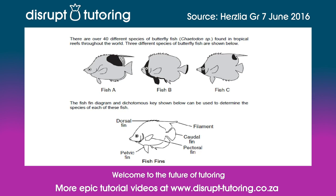Let's have a look at the narration. It reads: there are 40 different species of butterfly fish, with shaded species found in tropical reefs throughout the world. Three different species of butterfly fish are shown below — Fish A, Fish B, and Fish C. The fish fin diagram and dichotomous key shown below can be used to determine the species of each of these fish. The diagram shows the position of the dorsal fin, pelvic fin, pectoral fin, caudal fin, as well as the filament.